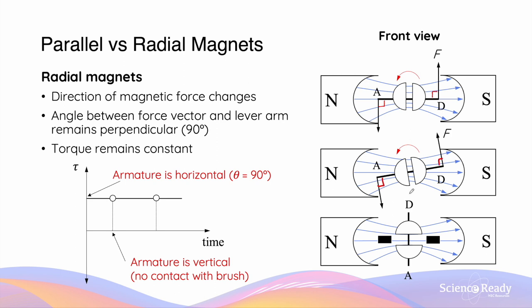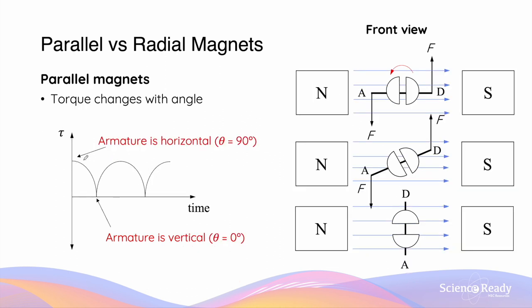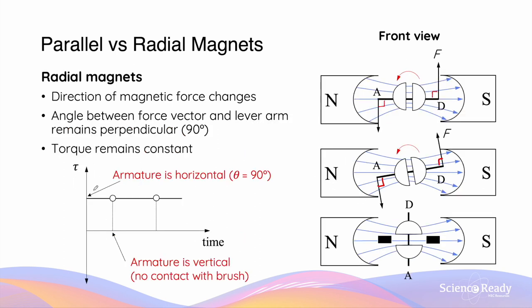Now remember, torque is at its maximum when the angle between the force vector and the lever arm or the armature's plane is perpendicular. So if we can achieve this using a pair of radial magnets, we can allow the magnitude of torque to always remain at its maximum value throughout the rotation of the armature. This is an advantage of using radial magnets over parallel magnets. For parallel magnets, the torque fluctuates between a maximum value and zero, whereas for radial magnets, it remains the maximum value throughout the rotation.